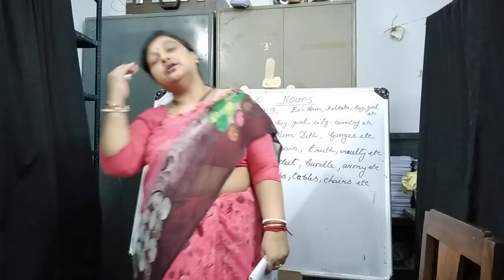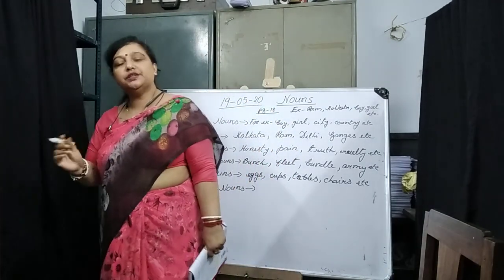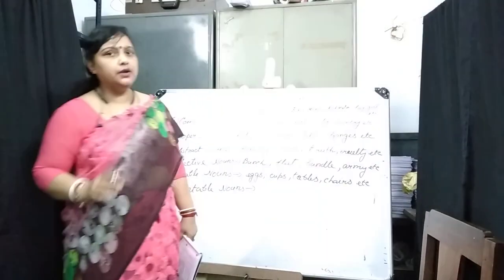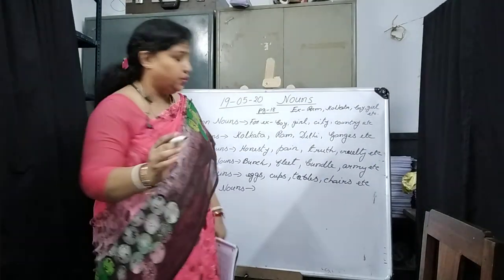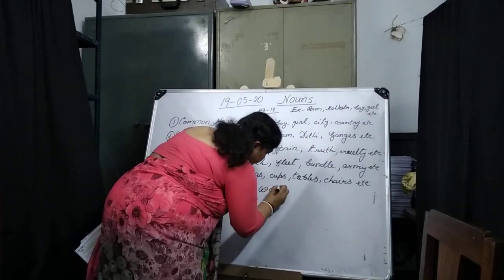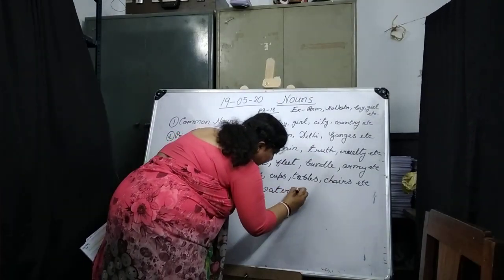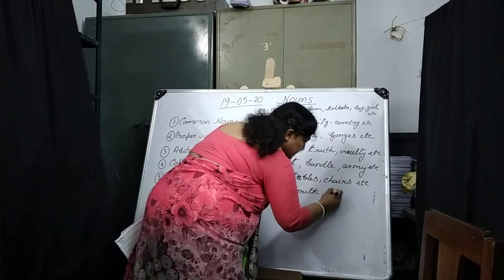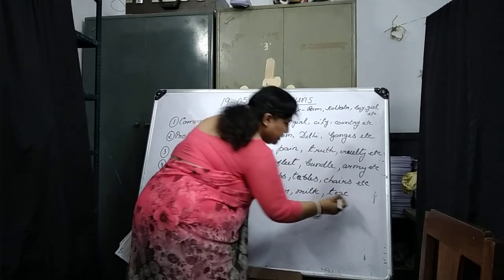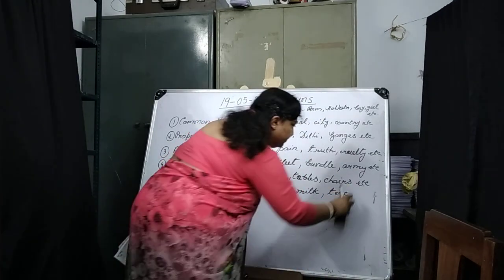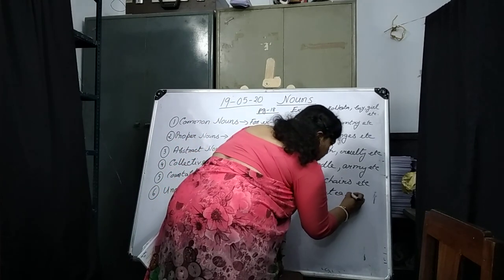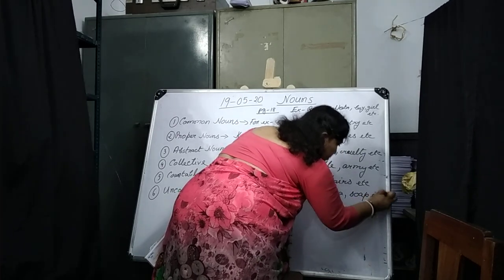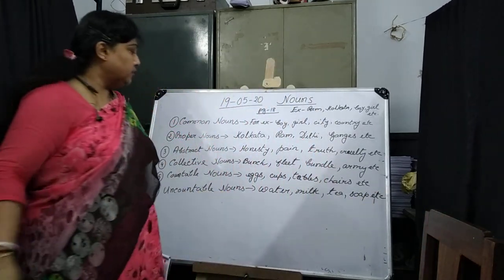Uncountable nouns. What are uncountable nouns? Nouns which cannot be counted are called uncountable nouns. For example: water — can we count water? No. Milk — can we count milk? No. Tea — can we count tea? No. Soap — can we count soap? No. So all these are uncountable nouns.